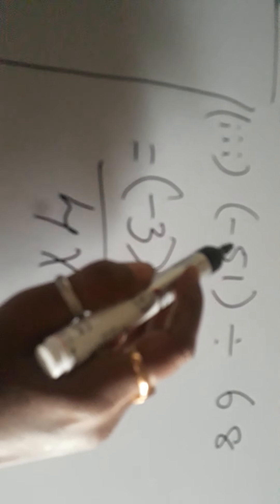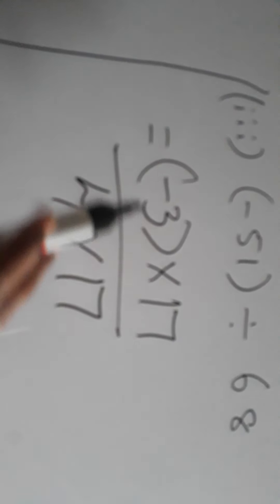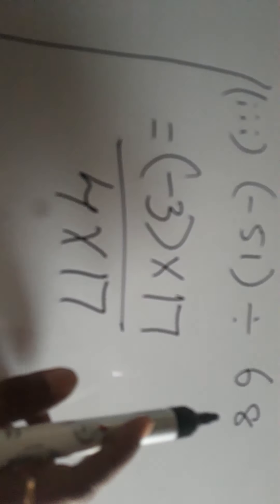So minus 51 I have split into minus 3 into 17, because 3 17s are 51 and minus into plus will give me minus. 68 I have split it into 4 into 17.